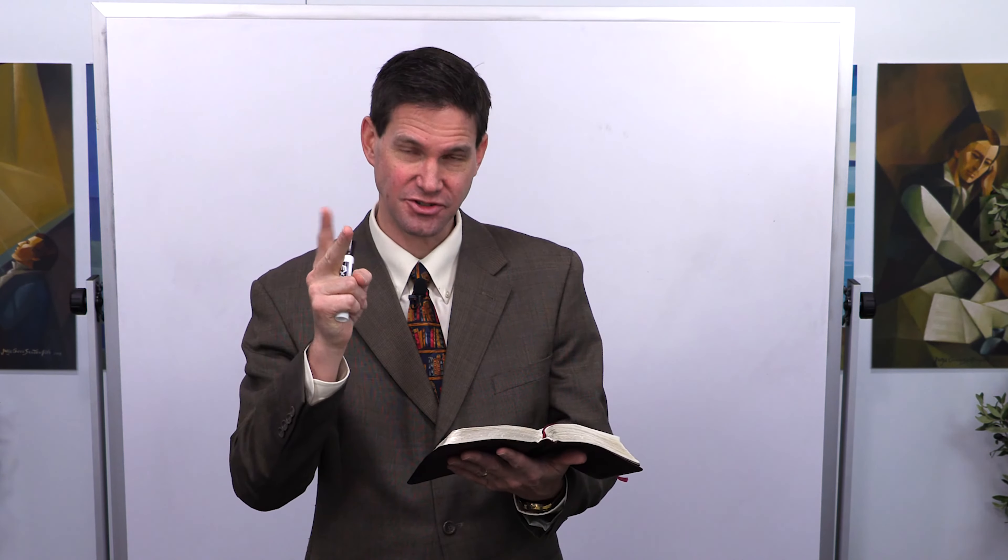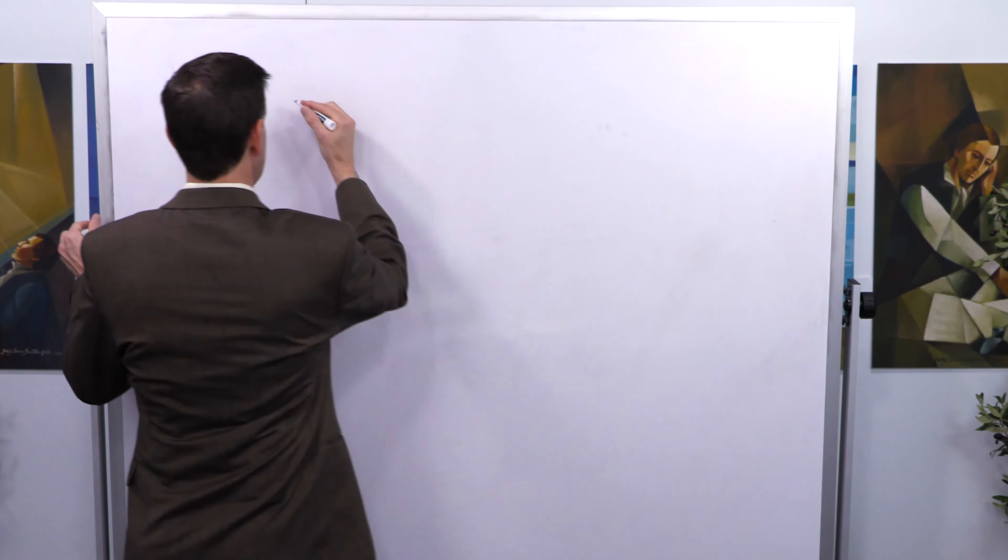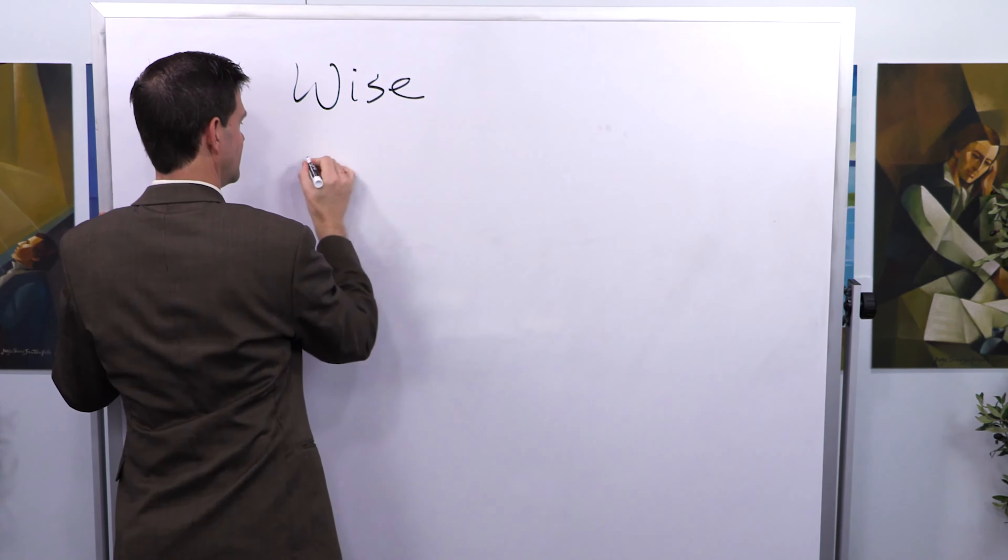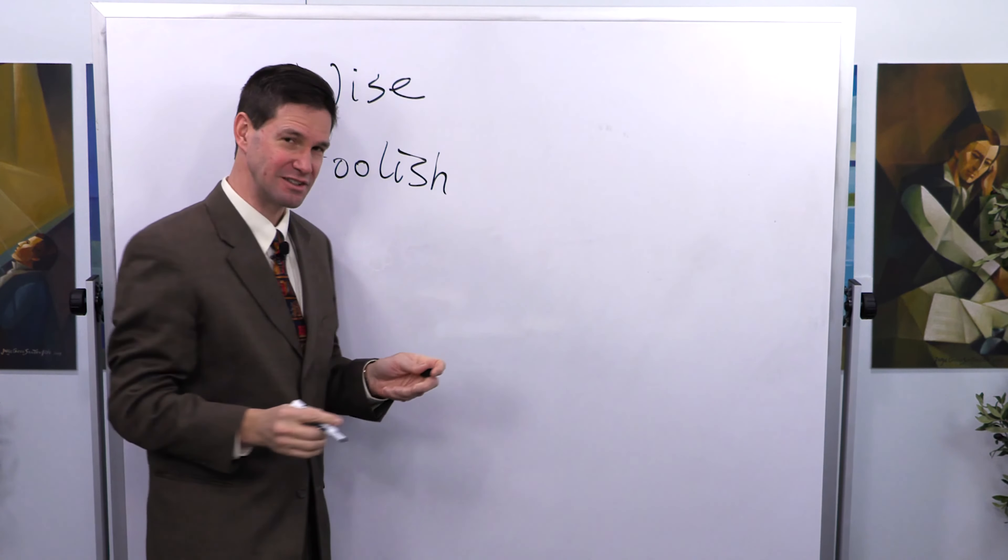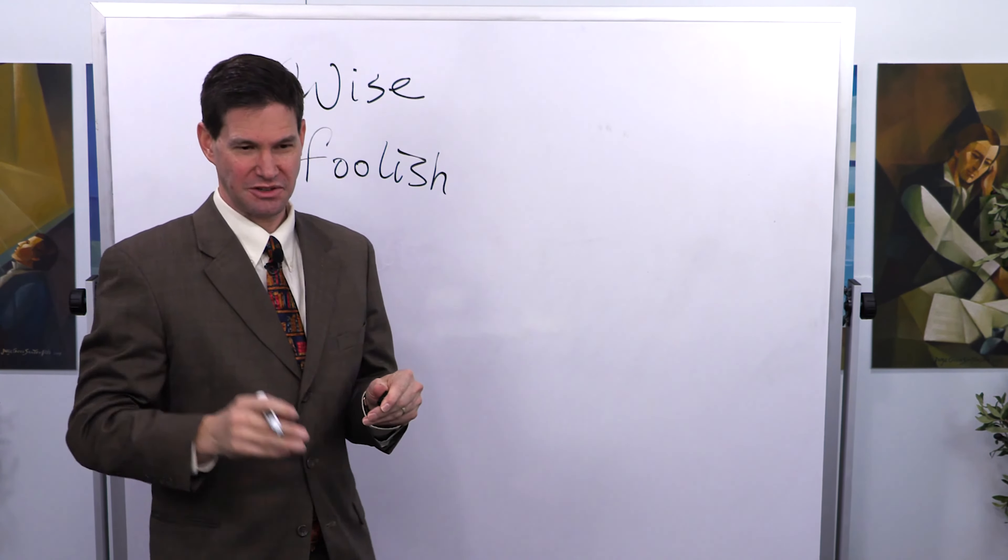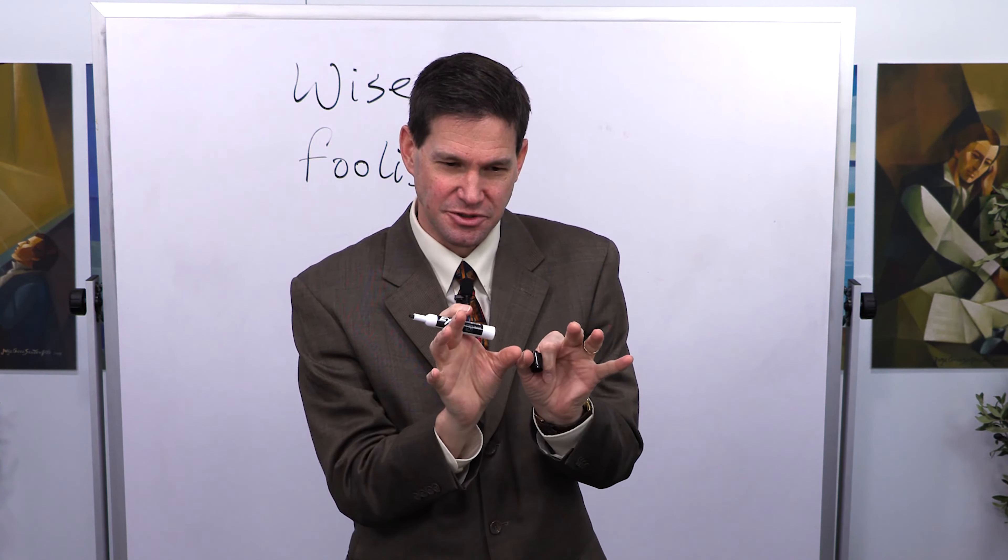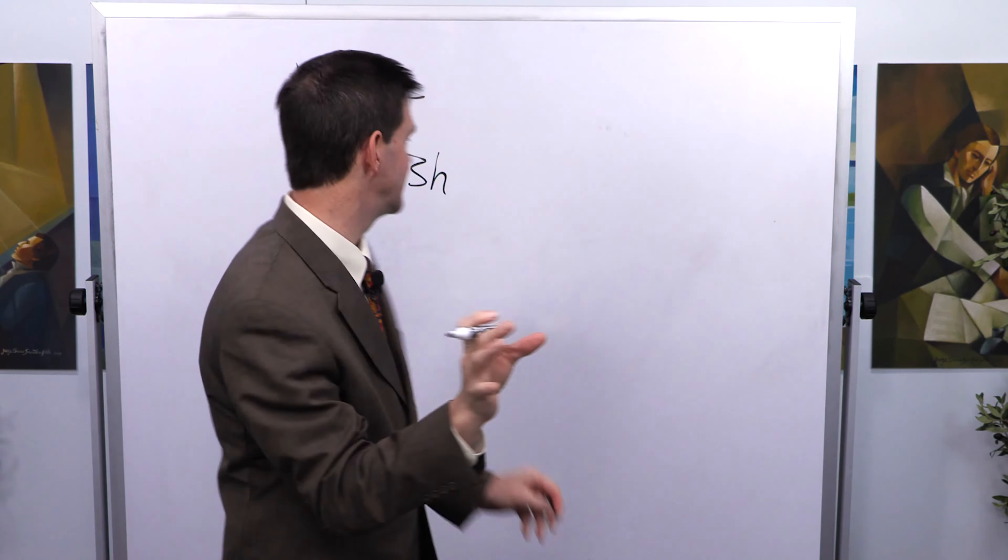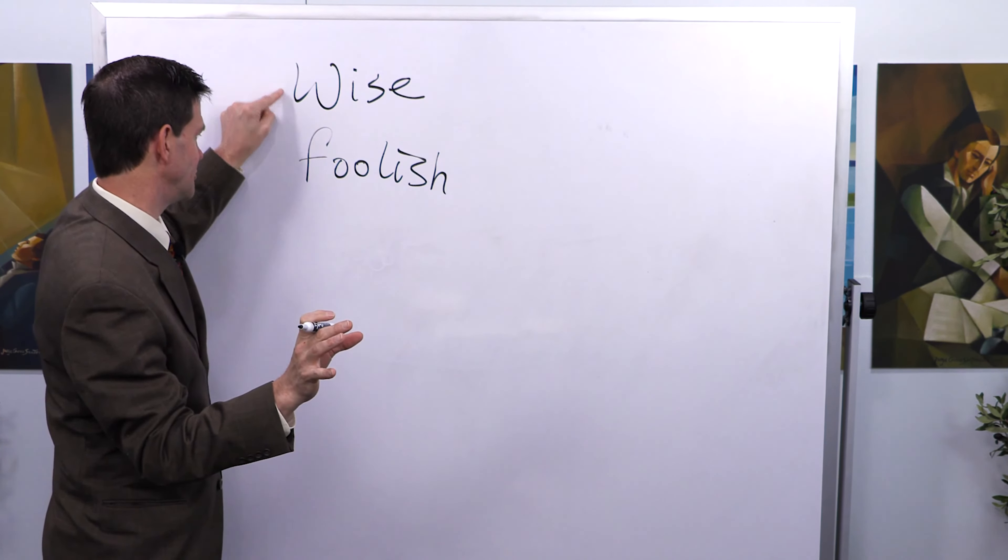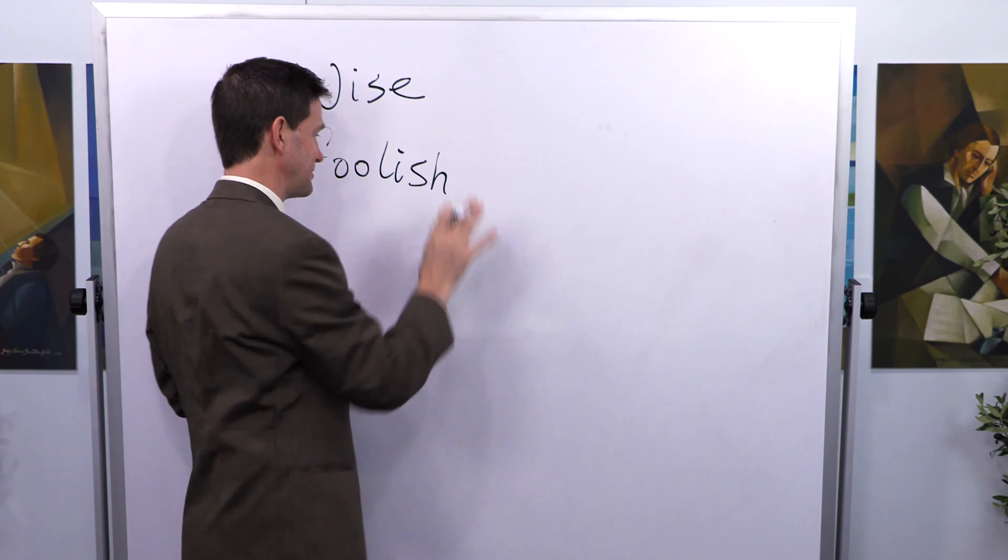And then you'll notice in verse 5, actually as he leads into this, he's contrasting between two people, two kinds of people, and even though he doesn't use the exact words here like he does in the Book of Mormon and in the New Testament of the wise and the foolish, whether it be the virgins or the wise men and the foolish man, he's constantly in scripture showing you the contrast between that which is just really wise to do and that which you should just avoid it at all costs because it's foolish.